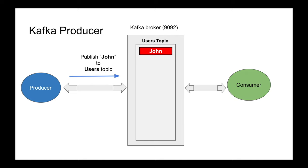You can always add stuff to Kafka; you cannot delete stuff. It's always append-only. And each message is referred to by the topic and the position. Position gives very fast access — go to position number zero, that's John; go to position number one, that's Ed. So it's very simple to index quickly because everything is sequential.